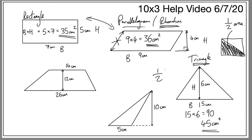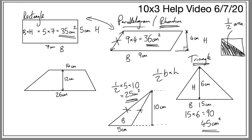Remember for triangles it's half the base times the height. This next question is a little bit more tricky. The base is 5, and the height — it's not this length or this length, it's the actual height of the triangle from the base. In this case it goes up 10, so for this one I would do half of 5 times 10, and that gives me an answer of 25 centimeters squared.